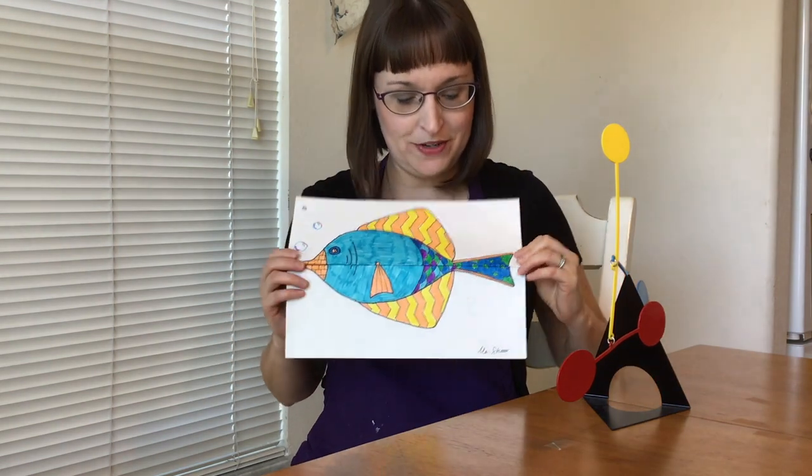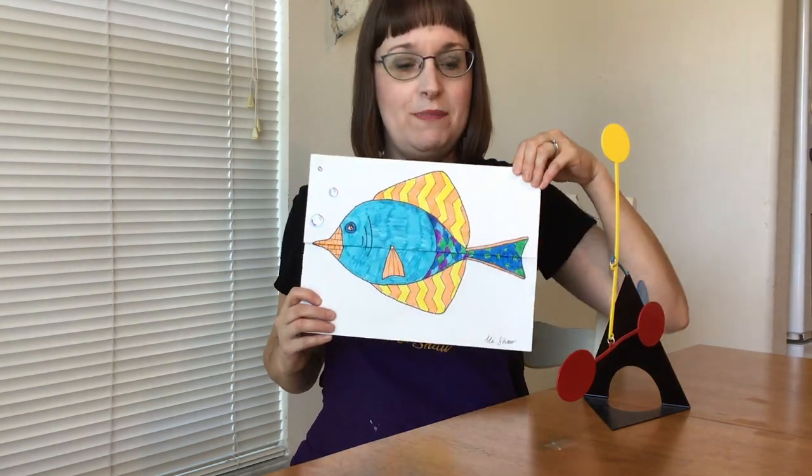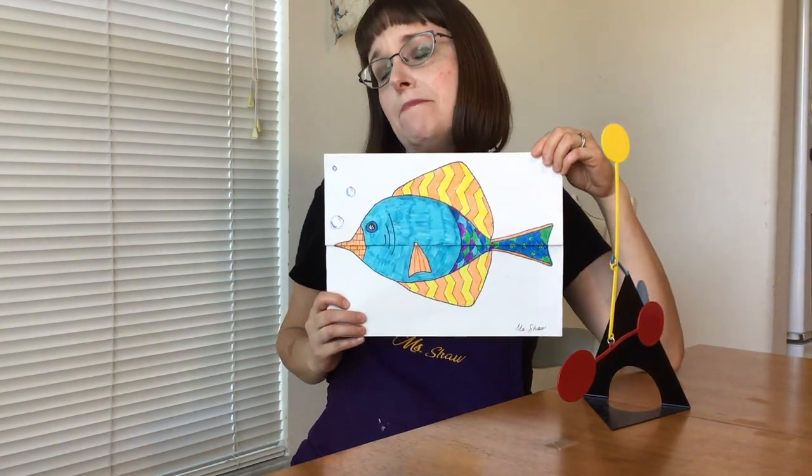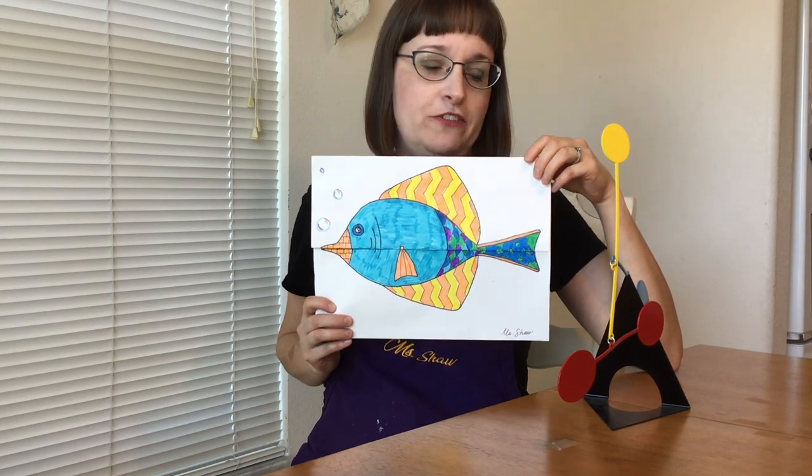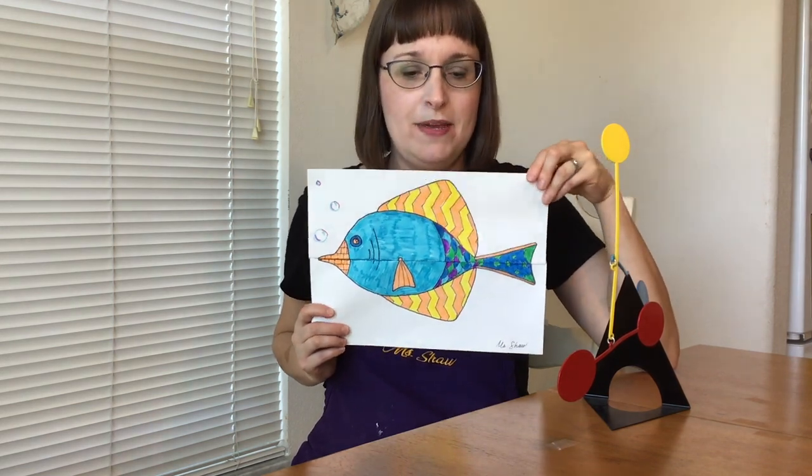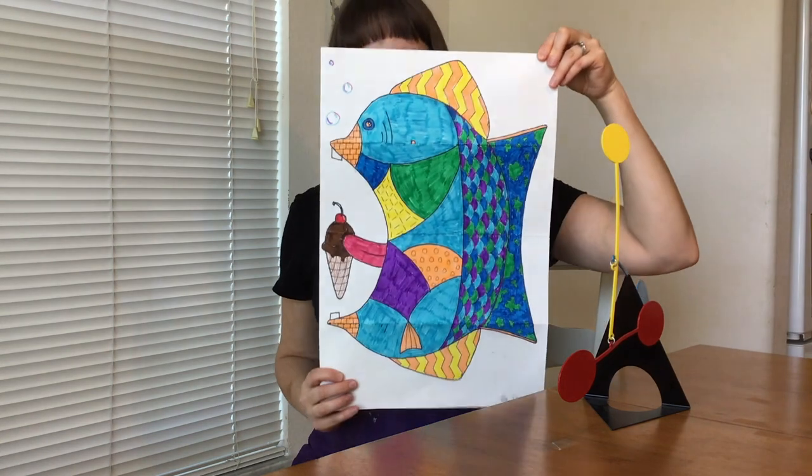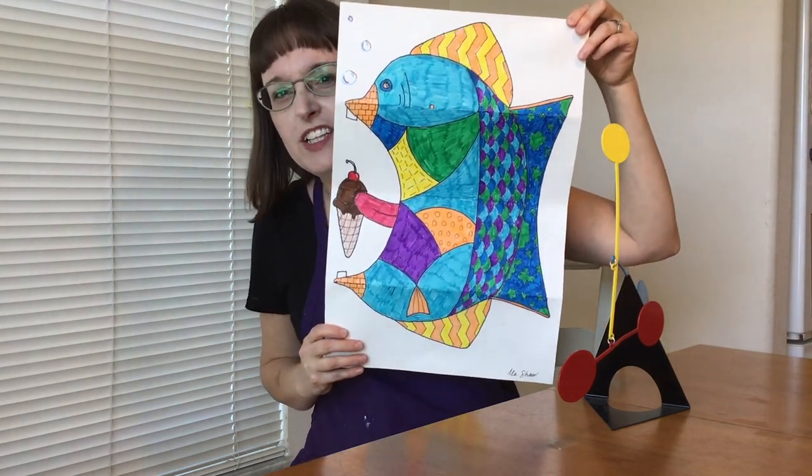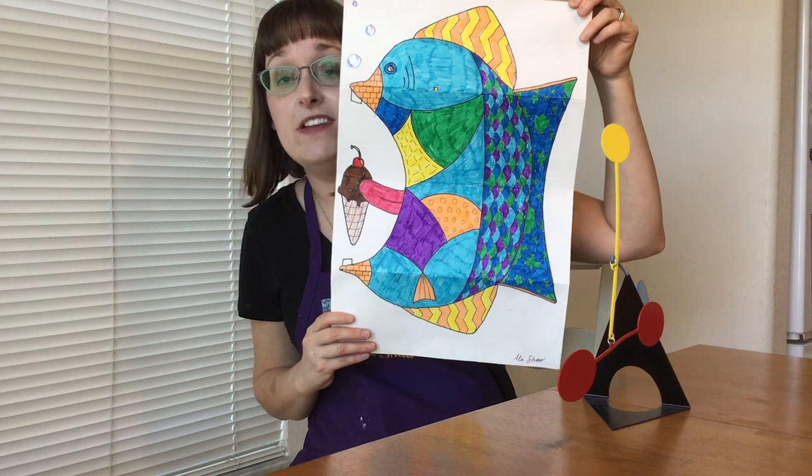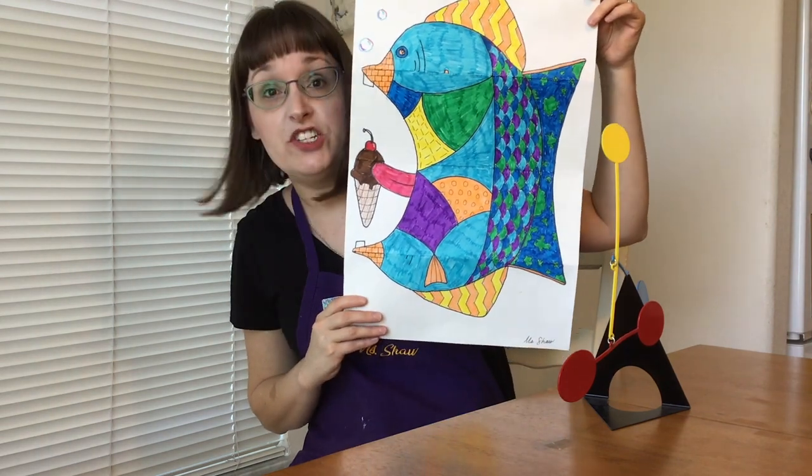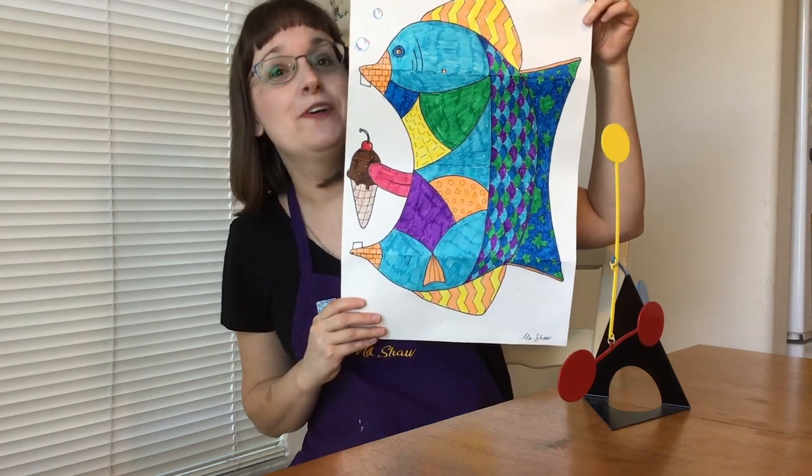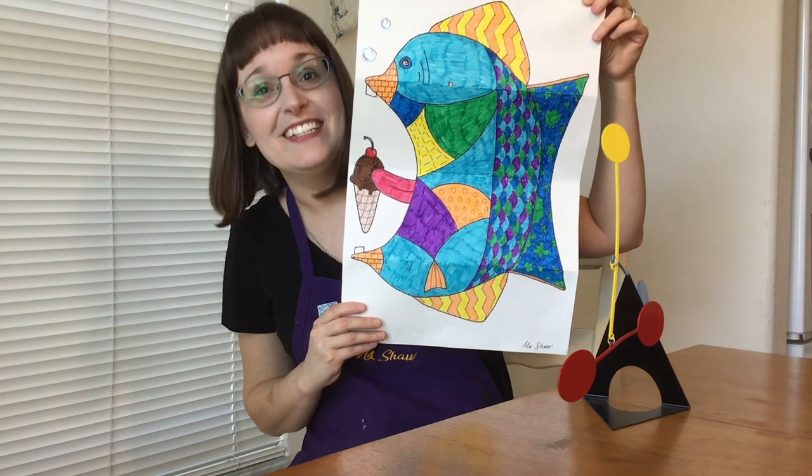But today we're going to be making our art move by the power of us. So this is what we're going to be making. We're going to be making fish. Now this fish looks like a mild-mannered innocent little fish, but when you open it up he becomes an ice cream-seeking chocolate-loving maniac. I would not want to get in the way of this fish and his chocolate ice cream. We're gonna have a lot of fun with this project. Let's get started.